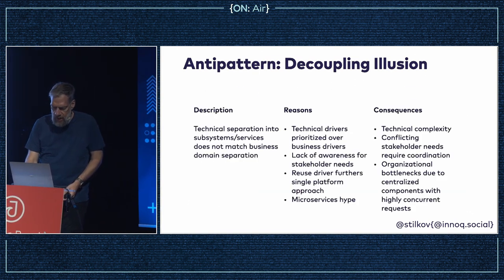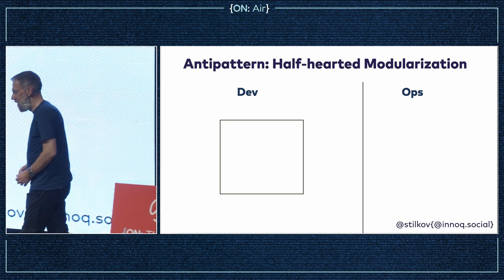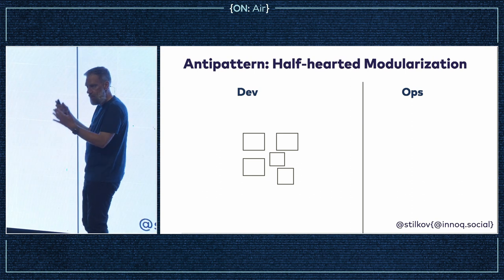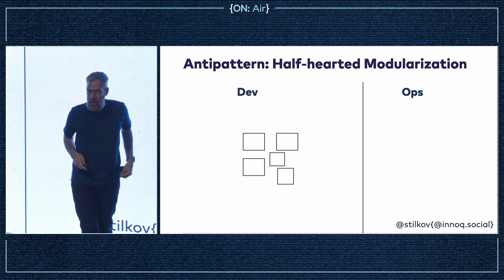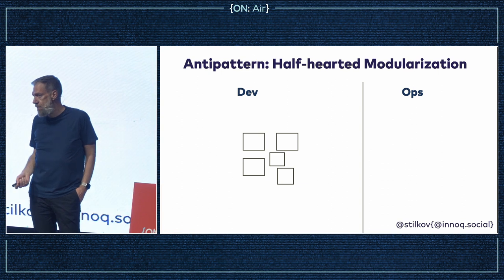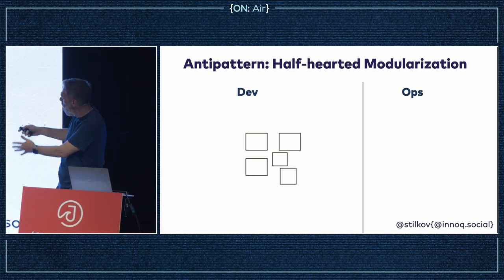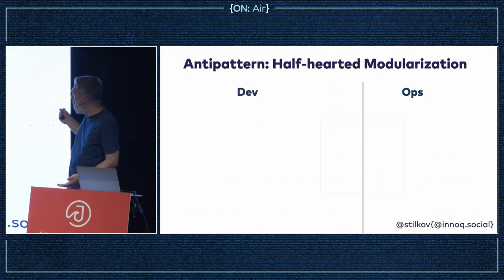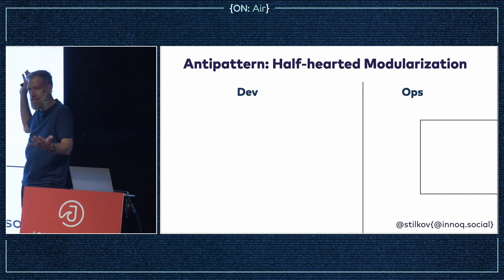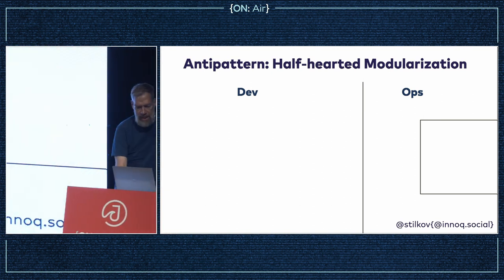The second anti-pattern is half-hearted modularization: in the development phase you have a wonderful structure — you've separated your monolithic thing into smaller services — but the ops team isn't on board yet. They still have processes from bad experiences a decade ago about how to put things into production, so they require you to take everything and turn it into one big chunk for deployment. That completely defeats the purpose of the services architecture.